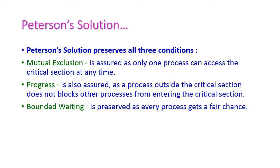The Peterson solution also preserves all three conditions of the critical section problem that we have seen in the last class. First is mutual exclusion — only one process can access the critical section at one time. Second is progress — a process outside the critical section does not block other processes from entering the critical section. Third is bounded waiting — which ensures that every process gets a fair chance to access the critical section.